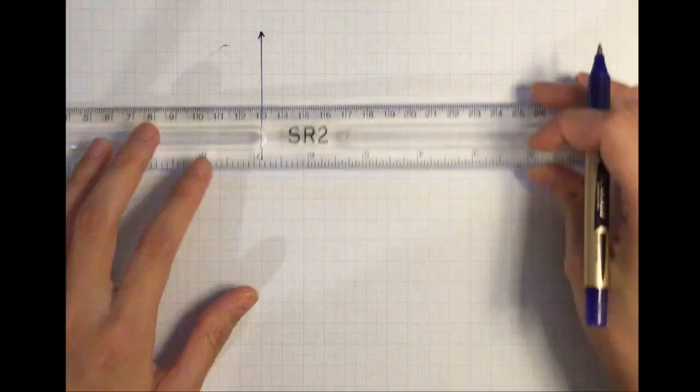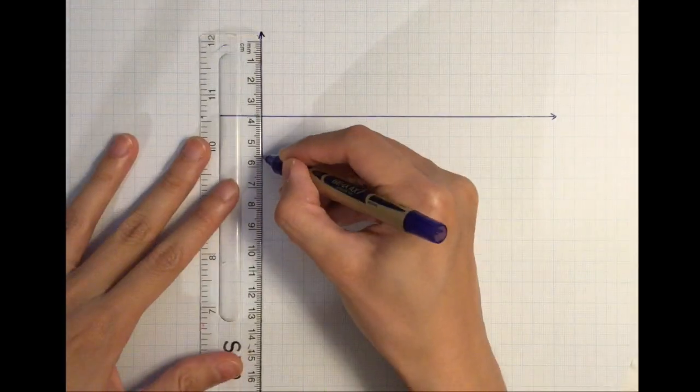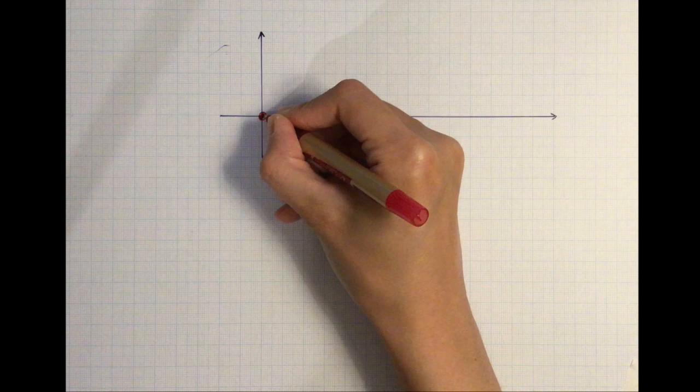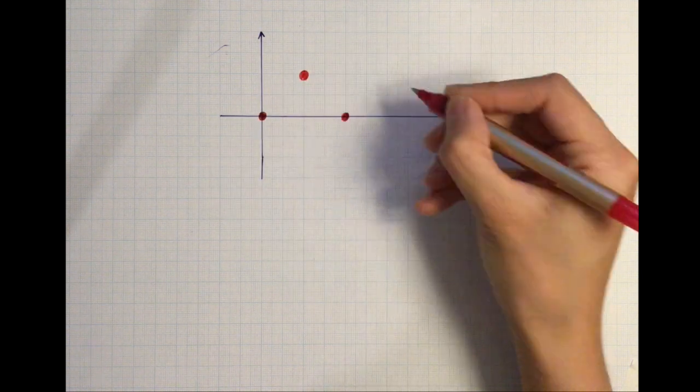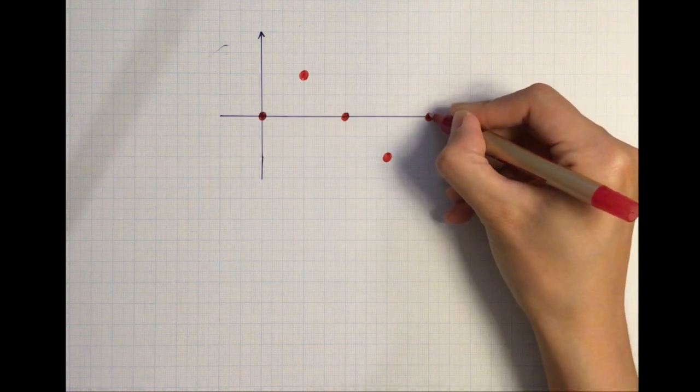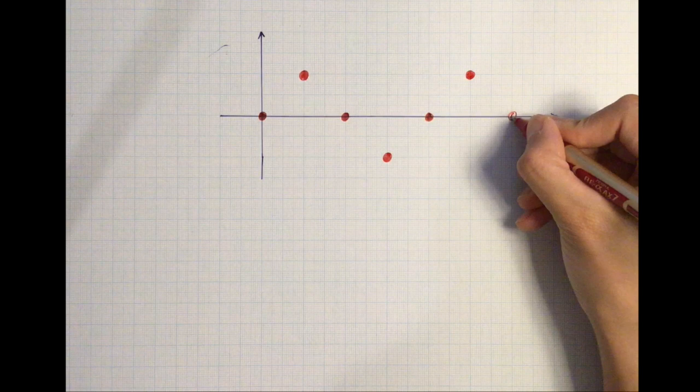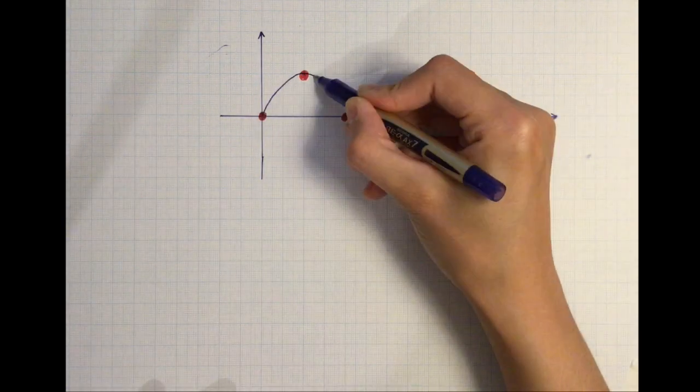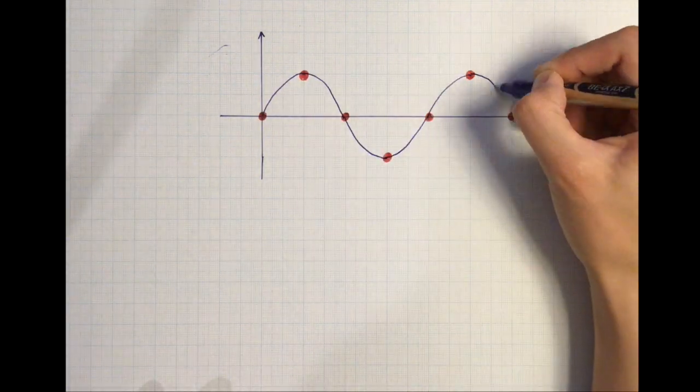We can plot a displacement-time graph for an oscillating particle, and it's going to look like a sine wave. This graph is going to tell us how far away from the equilibrium this particle is going to be at a certain time.